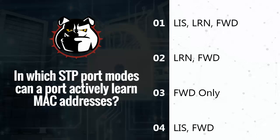In which spanning tree port modes can a port actively learn MAC addresses? Is it the listening, learning, and forwarding modes; the learning and forwarding modes; forwarding mode only; or listening and forwarding? If you want to think about it for a few seconds you might want to pause the video, because I'm literally going to show the answer in about two seconds.